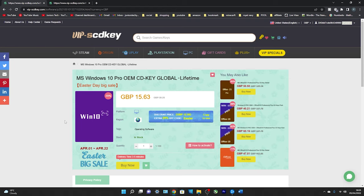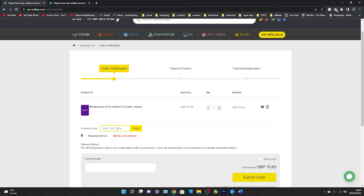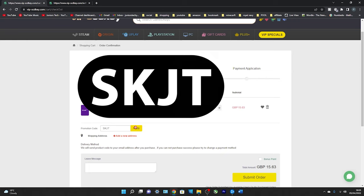Today we're looking at the Windows 10 Pro OEM CD key. What we need to do from here is go down below and actually click buy now. From here we have promotion code. If you type in the code SKJT and click on apply, you have now reduced your price down from 15 pounds 63 pence to 11 pounds 72 pence.